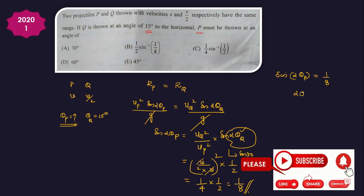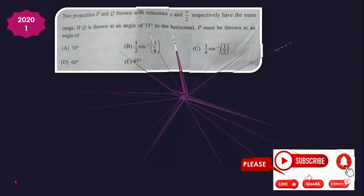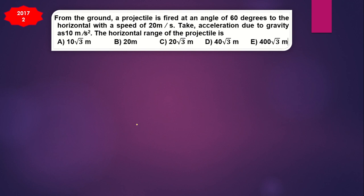So the value of 2θP = sine inverse of 1/8. Therefore θP = (1/2) × sine inverse of 1/8. That is the concept. The answer is the second option, B.